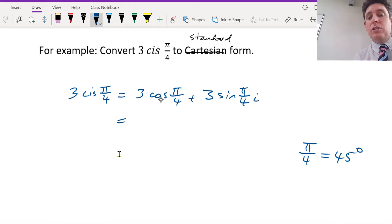So you've got a special triangle or a standard triangle. So pi over 4, pi over 4, 1, 1, square root 2.